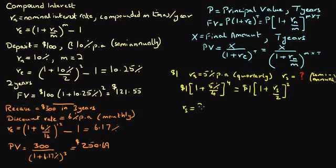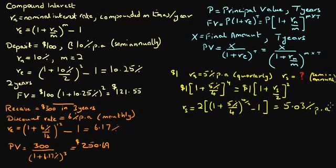We get 2 times 1 plus 5% divided by 4, all this to the power 4 over 2 minus 1. And this should be equal to 5.03% per annum. So we can see that nominal interest rate compounded semi-annually is greater than that compounded quarterly. And that's because interest that deposit accumulates over time is now being compounded with lower frequency.